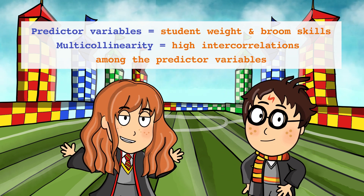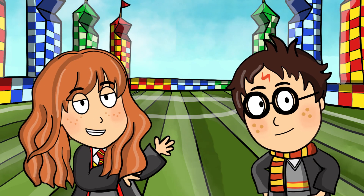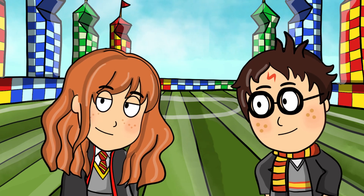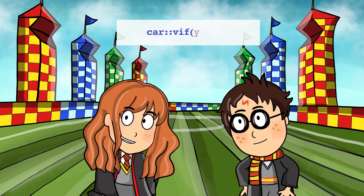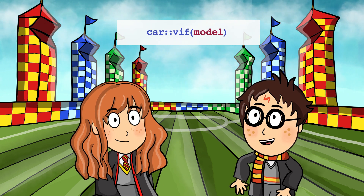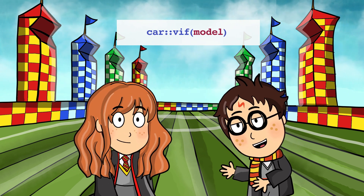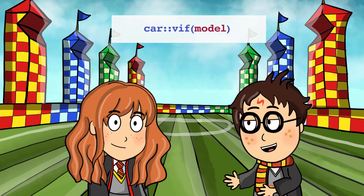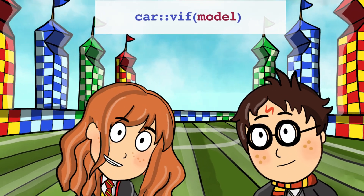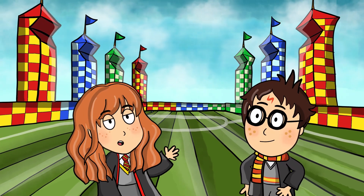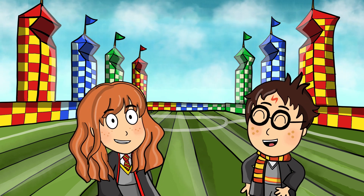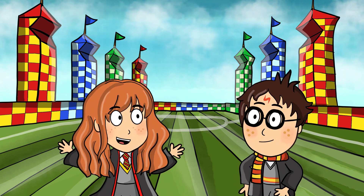We need to check if there is high intercorrelation among these two variables. We can use the variance inflation factor score to assess multicollinearity. Let's run the vif function from the car package. The variance inflation factor for student weight and broom skills is around 1. A variance inflation factor below 5 means that multicollinearity is not an issue. So our model is okay.